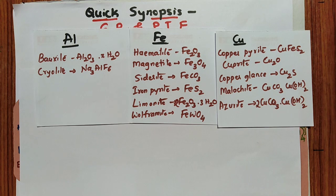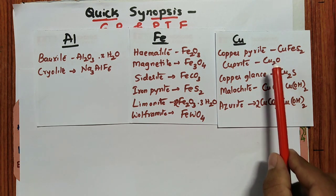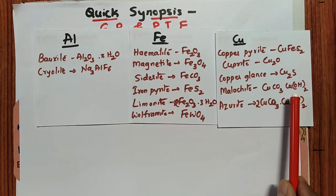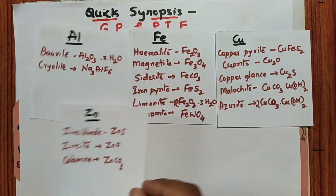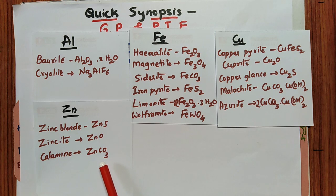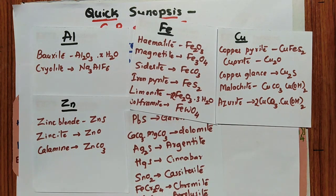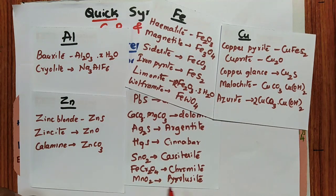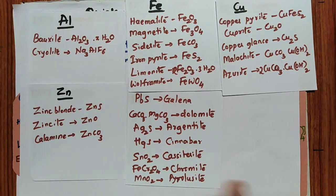For copper: copper pyrite (CuFeS₂) — this ore contains both copper and iron. Also cuprite (Cu₂O) — oxidation state of copper is +1, asked in a previous exam. Copper glance (Cu₂S), malachite (CuCO₃·Cu(OH)₂), and azurite (2CuCO₃·Cu(OH)₂). For zinc: zinc blende (ZnS), zincite (ZnO), calamine (ZnCO₃). Other important ores: galena (PbS), dolomite (MgCO₃), argentite (Ag₂S), cinnabar (HgS), cassiterite (SnO₂), chromite (FeCr₂O₄), pyrolusite (MnO₂). These are sufficient for CET, NEET, or JEE.